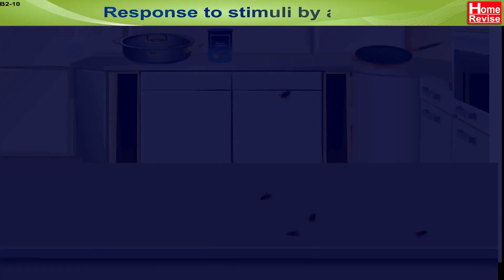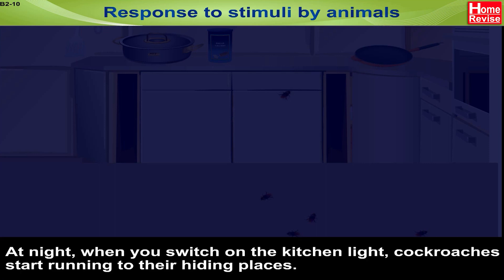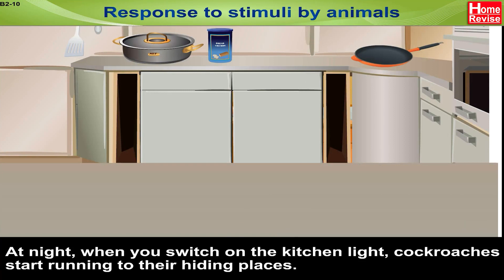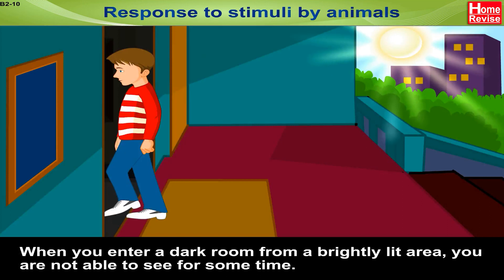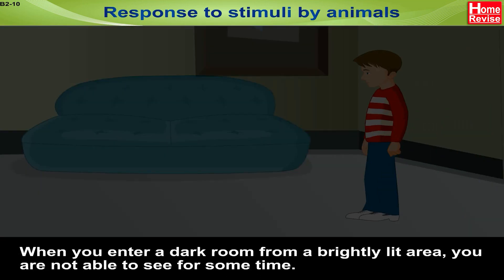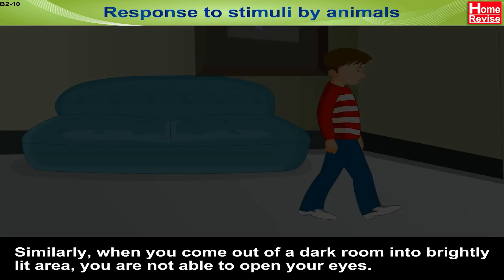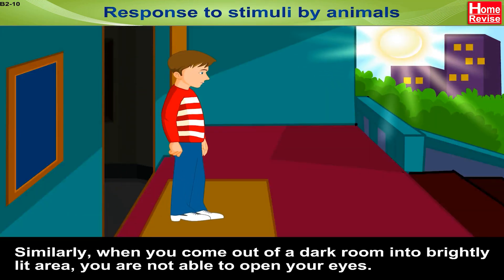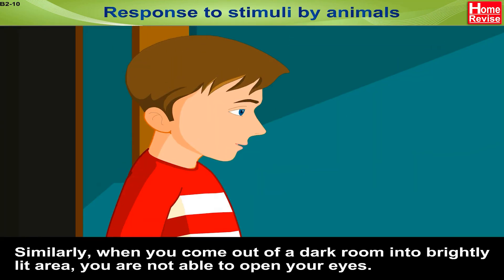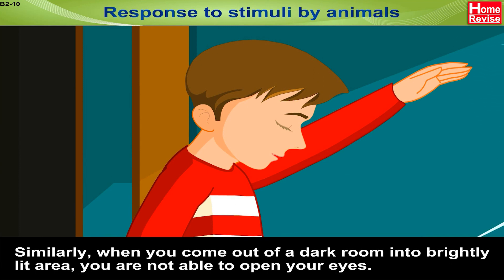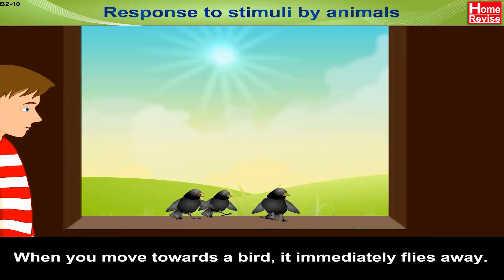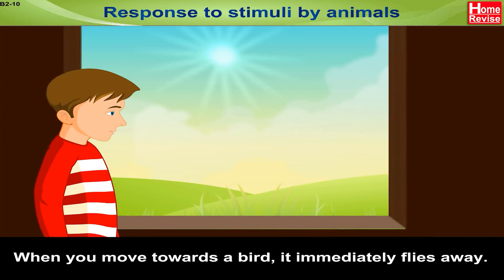Response to stimuli by animals: at night when you switch on the kitchen light, cockroaches start running to their hiding places. When you enter a dark room from a brightly lit area you are not able to see for some time. Similarly, when you come out of a dark room into a brightly lit area you are not able to open your eyes. When you move towards a bird, it immediately flies away.